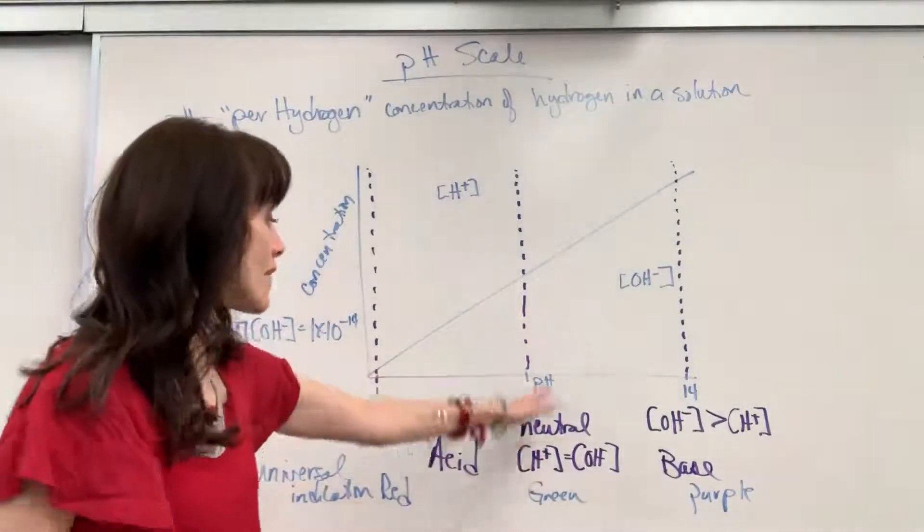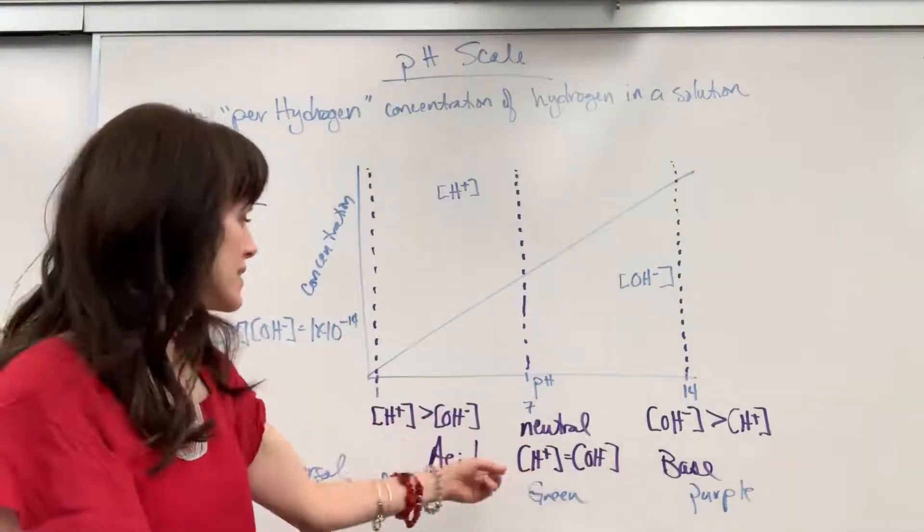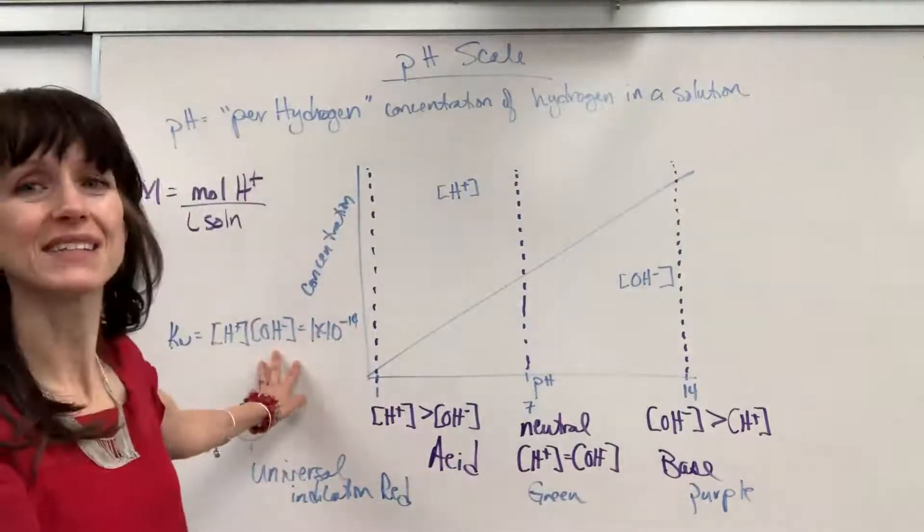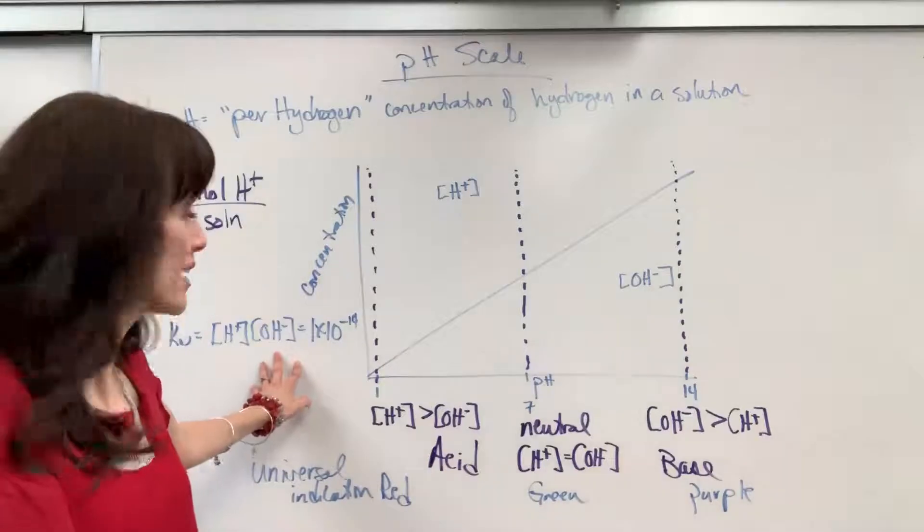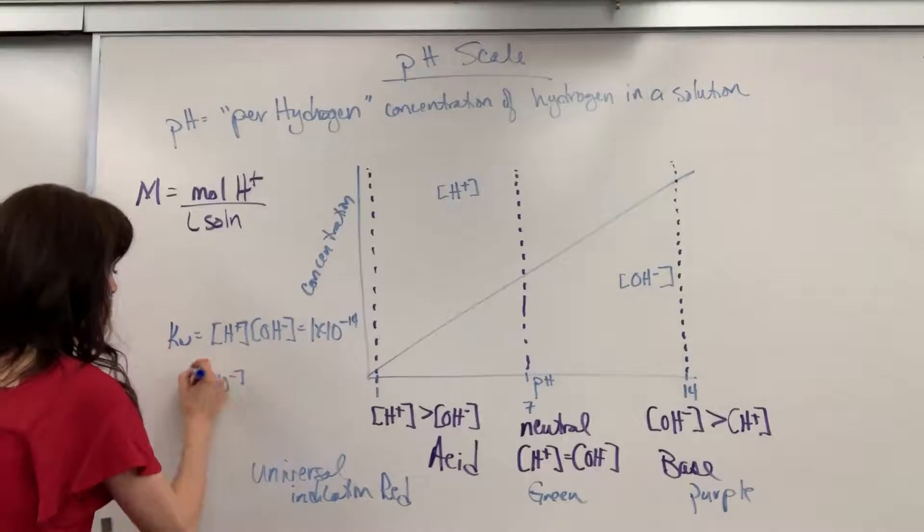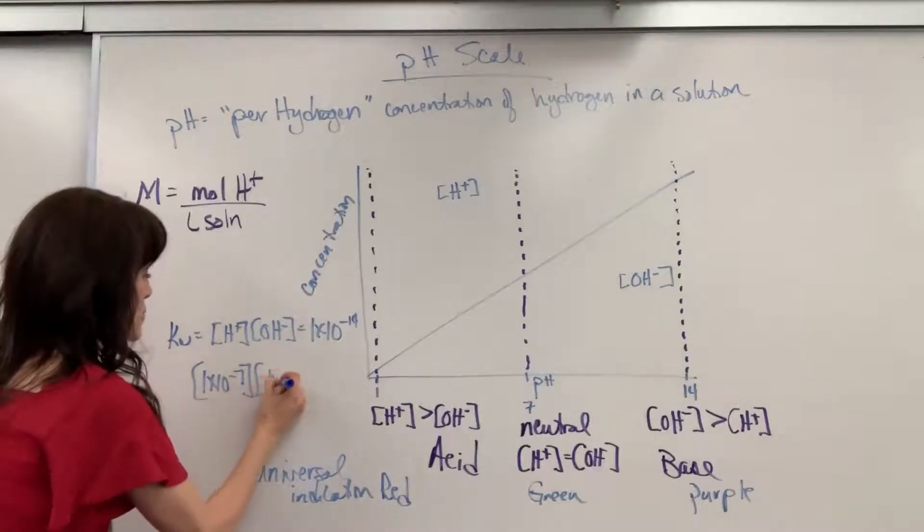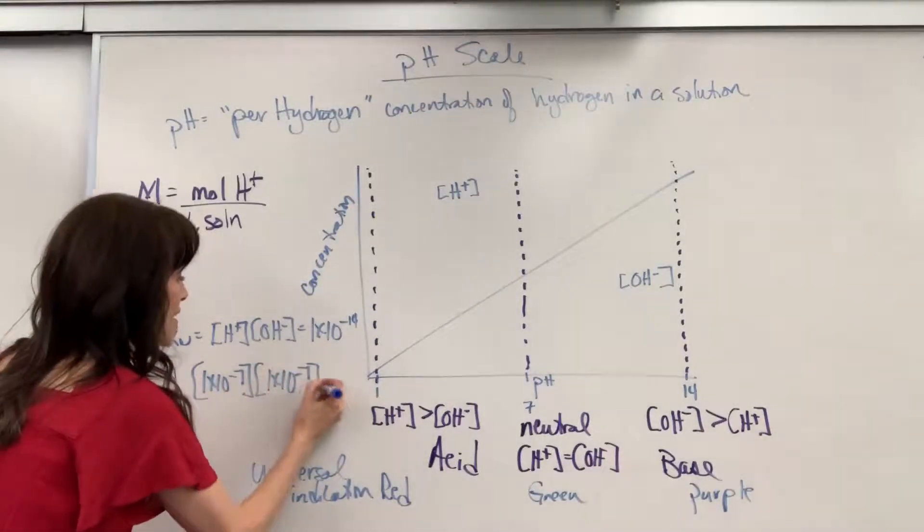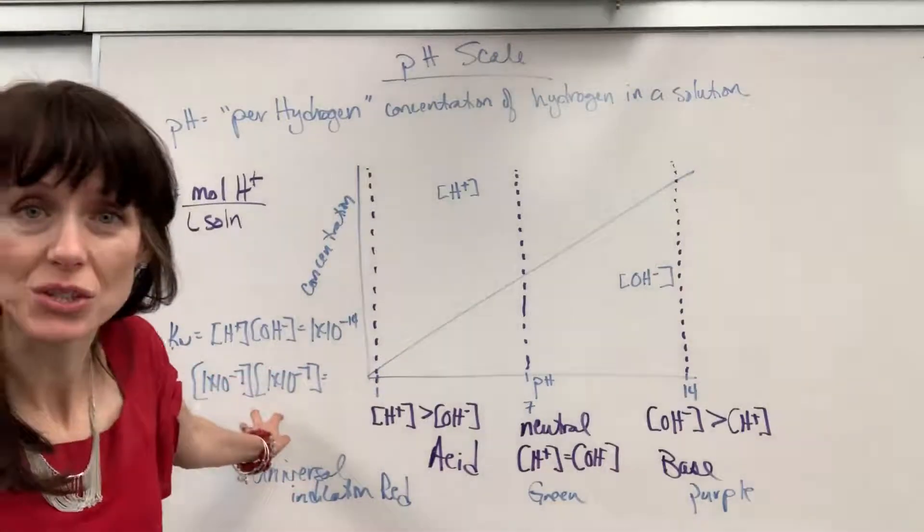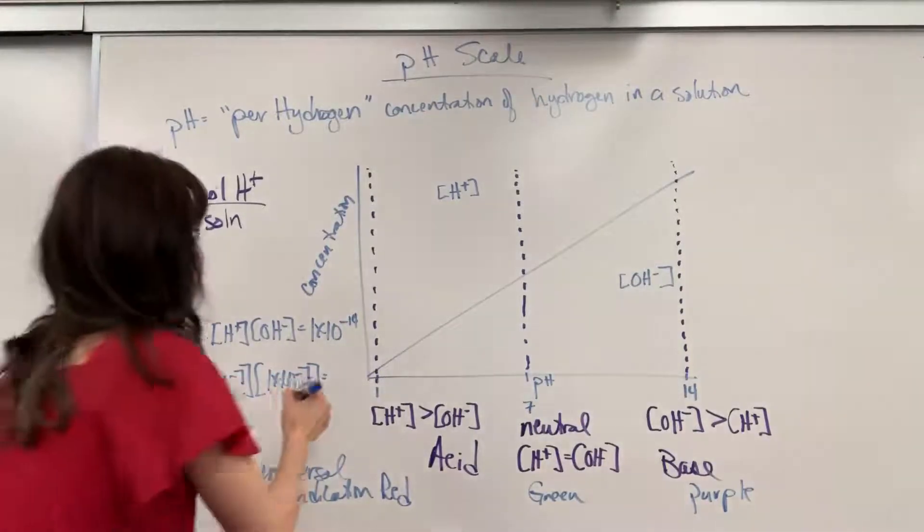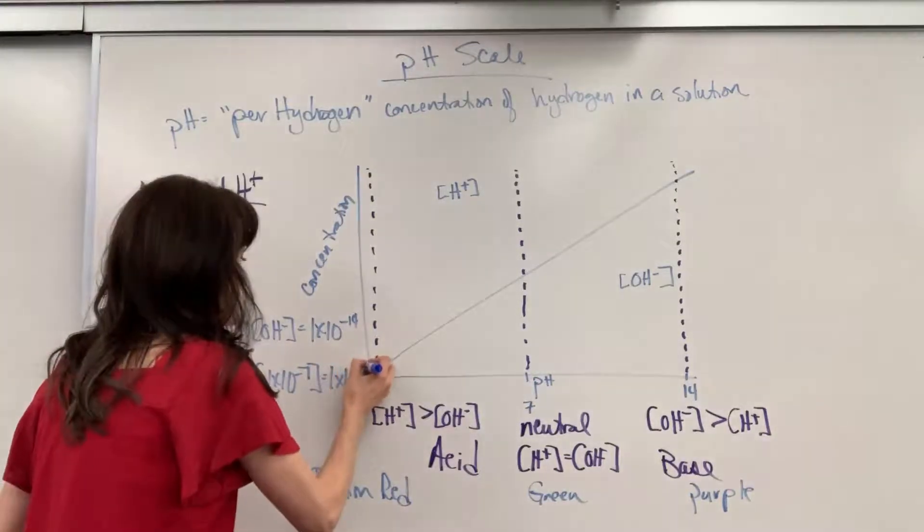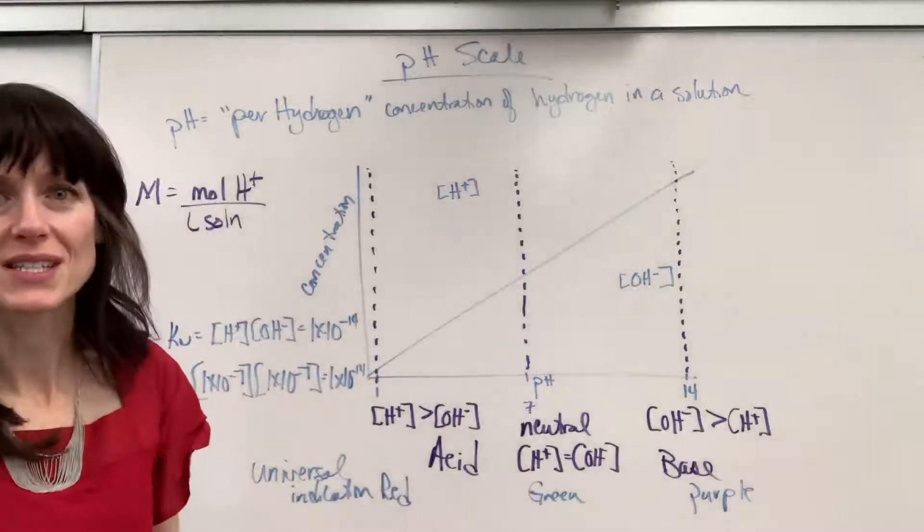So let's jump in at the neutral right here. I had said hydrogen equals hydroxide. Well, by looking at this, I can tell you right now exactly what those concentrations are. We're going to have 1 times 10 to the minus 7 for the hydrogen, times 1 times 10 to the minus 7 for the hydroxide. And what does that equal? So remember, exponents you add, 1 times 1 will be 1. Minus 7 plus minus 7 is 10 to the minus 14.